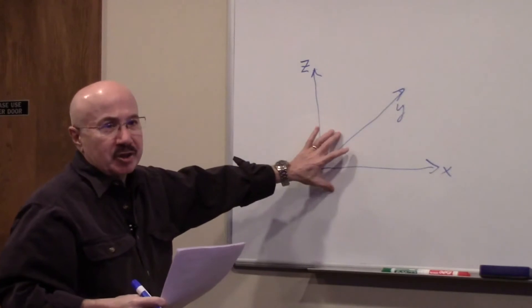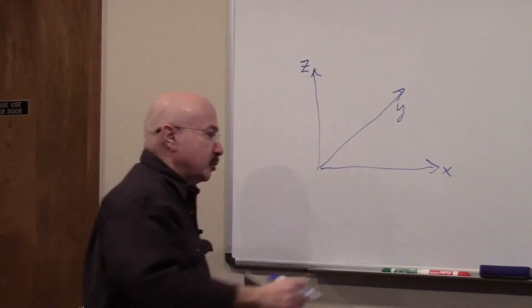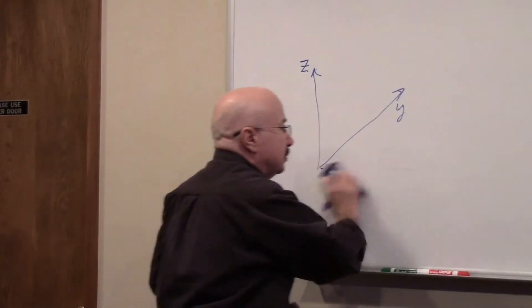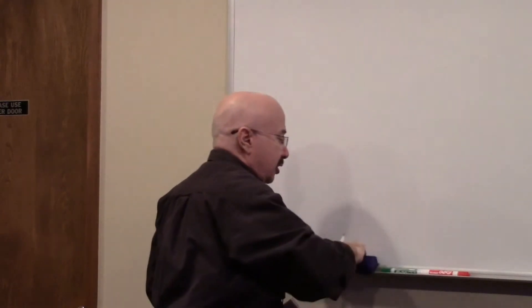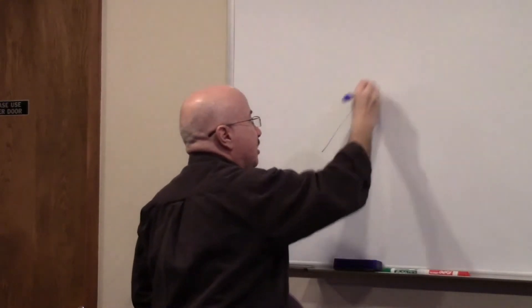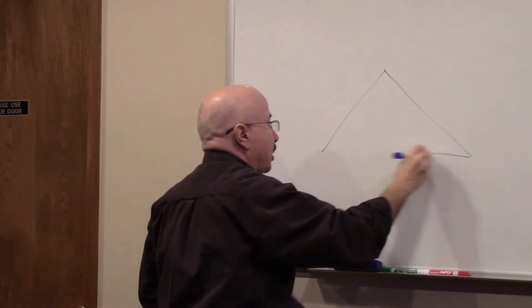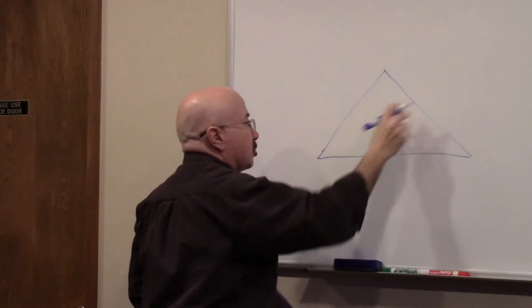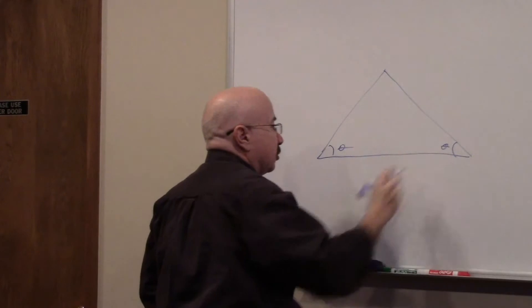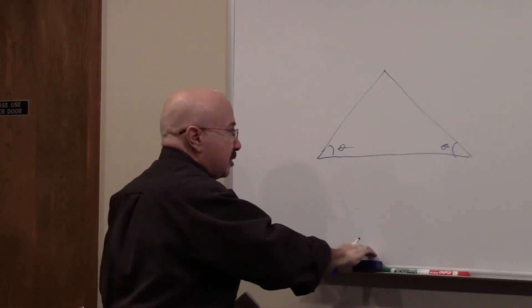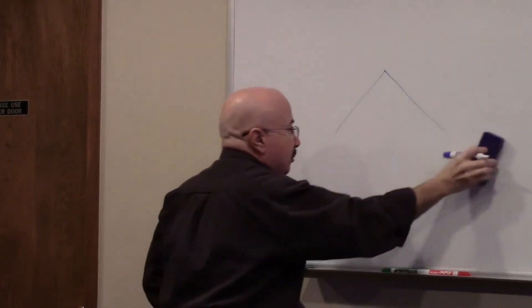And this was Euclidean geometry. And you probably remember back from your classes in geometry that in Euclidean geometry, if you had an isosceles triangle, which is a triangle with two equal sides, the angle here was equal to the angle here. So this angle was equal to this angle, they were the same. And so that's Euclidean geometry.